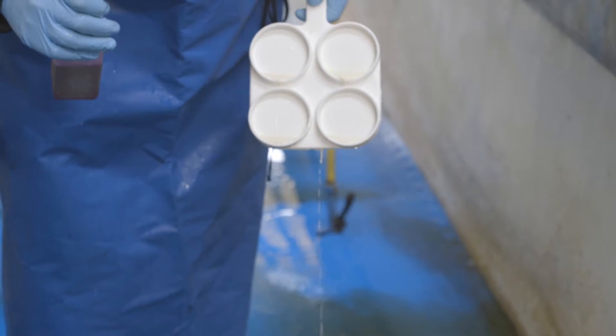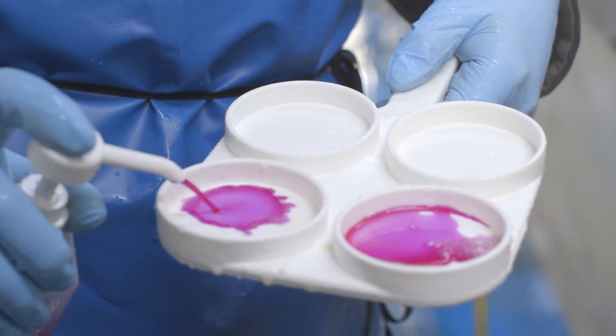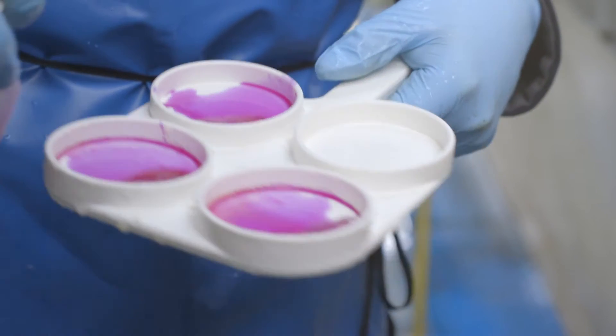Pour out the excess milk down to the marker line in each of the wells, add in equal amounts of CMT solution to each well of the paddle.